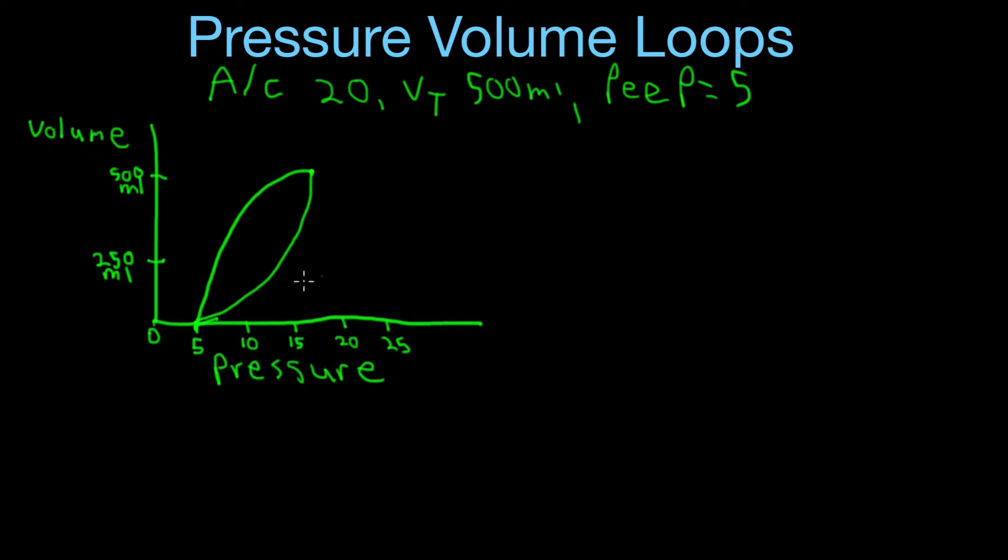And so if we had the PEEP set at let's say 10, then it would start right here on that breath and it would just go up in the same manner on inspiration until it reached that target tidal volume, then it would start to go back down to the set PEEP level.